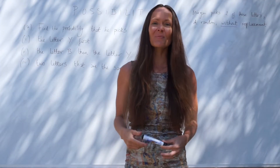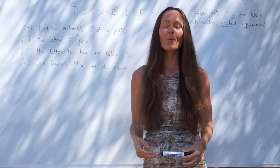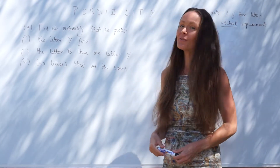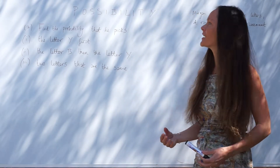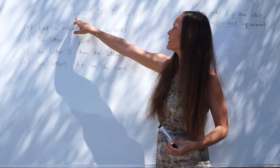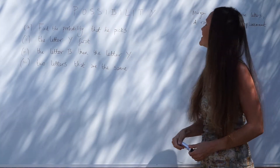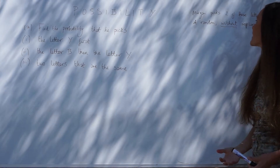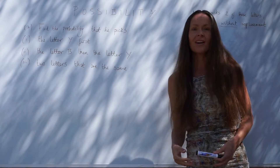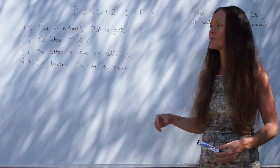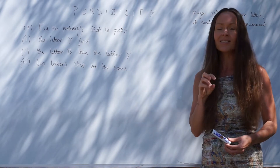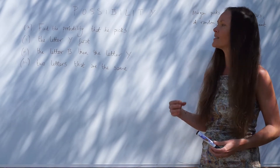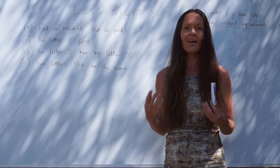In this lesson I'm going to show you some probability exam questions. In the first question we're given the word 'possibility'. On each card there's a different letter, and Morgan picks two of these letters at random without replacement. Without replacement means when he picks out one of the cards he doesn't put it back in the pile.